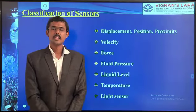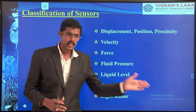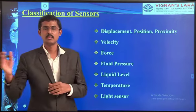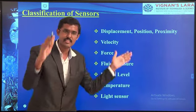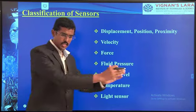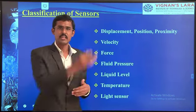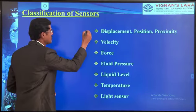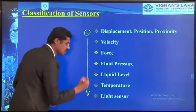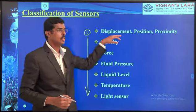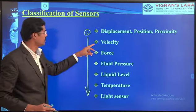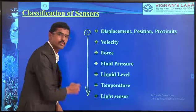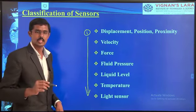Welcome to the session. In the early sessions we talked about types of sensors and transducers and classified them. From here we will continue about the various types of sensors — displacement, position, proximity, velocity, force, fluid pressure, liquid level, temperature, light, and various others. We will see these in the upcoming sessions.